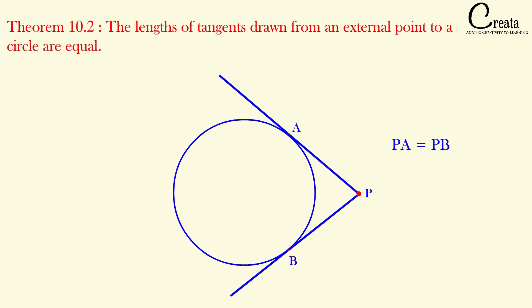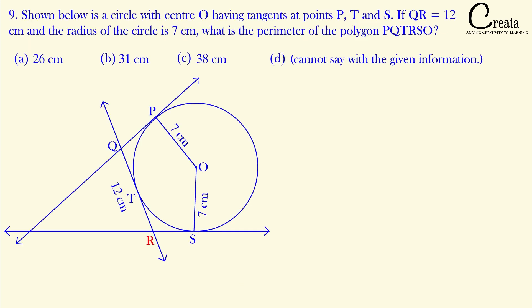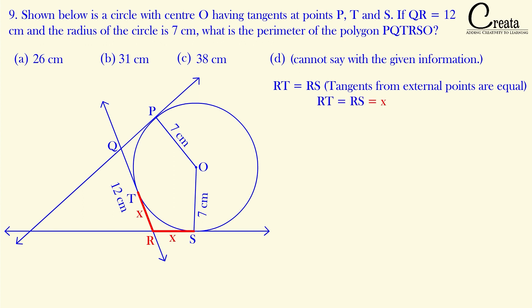The concept applicable here is: tangents from an external point to a circle are equal to each other. If we take point R as an external point, RT and RS are the two tangents from this external point toward the circle, so RT and RS will be equal. Let's assume both RS and RT as x, so RS = RT = x units.